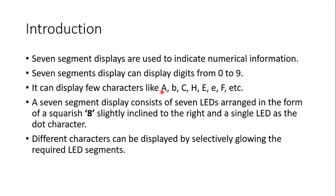The 7-segment display can also display a few characters like A, B, C, E, and F. A 7-segment display consists of 7 LEDs arranged in the form of a squarish 8, slightly inclined to the right, and a single LED as the dot character. Those LEDs are arranged in the fashion of an 8.